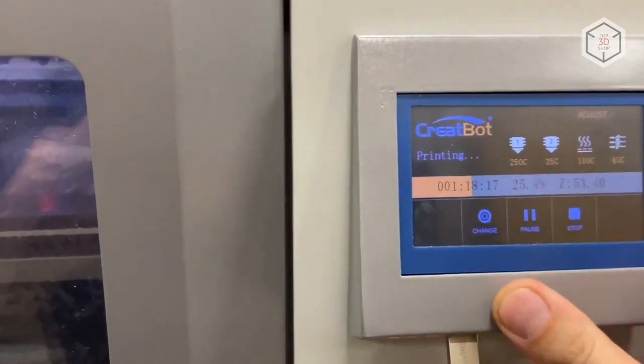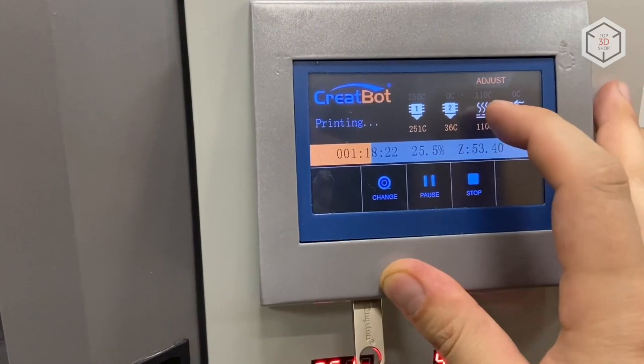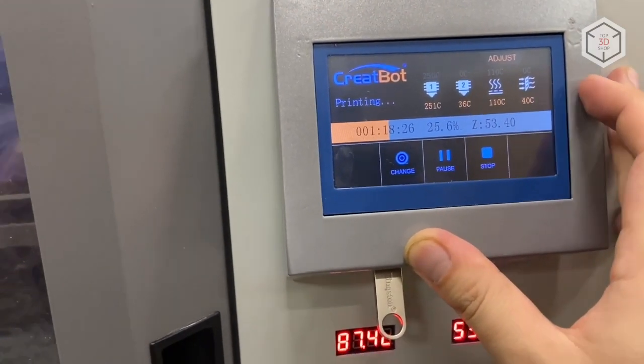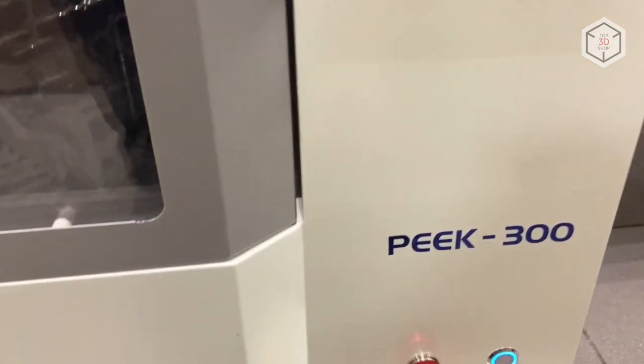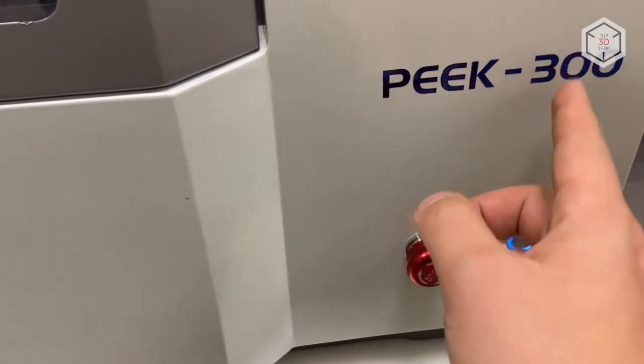The touchscreen is similar to other control panels used in the CreateBot line of 3D printers and offers a fast response and intuitive interface. An emergency power cut button can be found at the bottom of the front panel, like on a professional CNC machine. The on button is located to the side and can be engaged after unlocking.